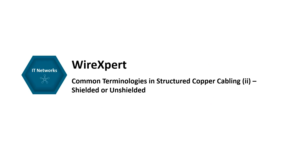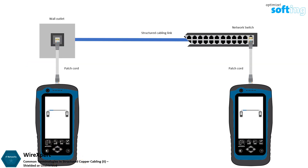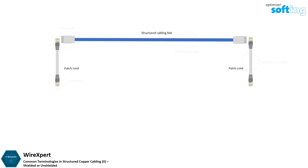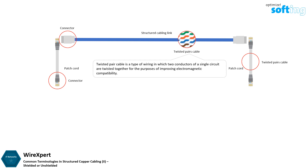In this video, we are going to explain some commonly used terms when performing copper certification tests. When performing a cable certification test, various measurements and calculations are taken from structured cabling links. In most cases, these links are connections made up of copper twisted pair cables and connectors. Twisted pair cable is a type of wiring in which two conductors of a single circuit are twisted together for the purposes of improving electromagnetic compatibility. A connector is the part of a cable that plugs into a port or interface to connect one device to another.